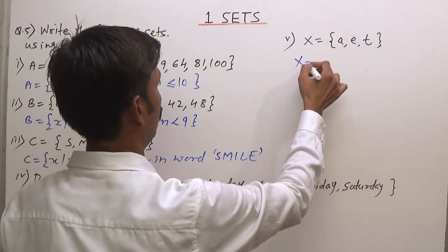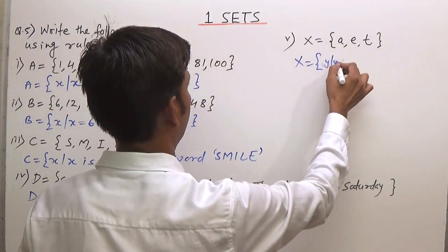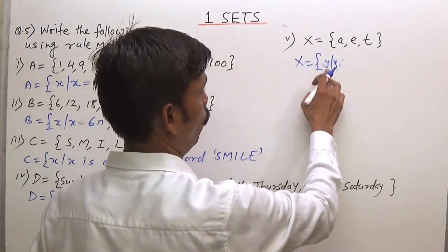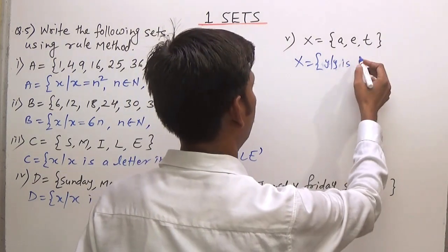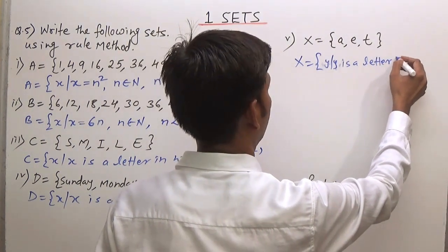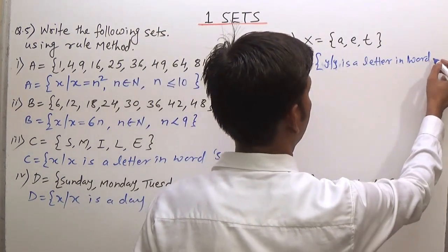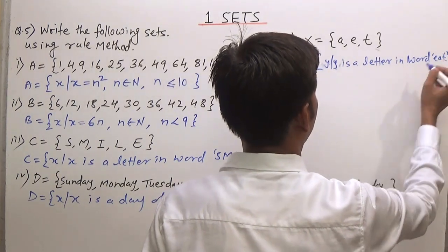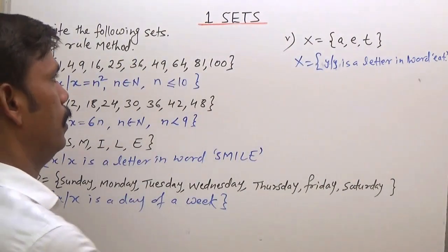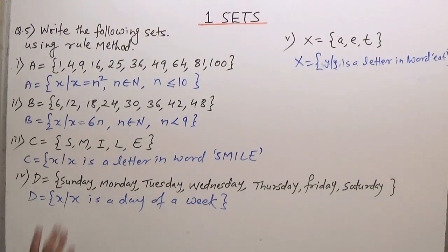Fifth question: set E = {x | x is a letter in the word 'eat'}. So the rule method gives us the set of all x such that x is a letter in the word 'eat.' This is how we write the rule method.